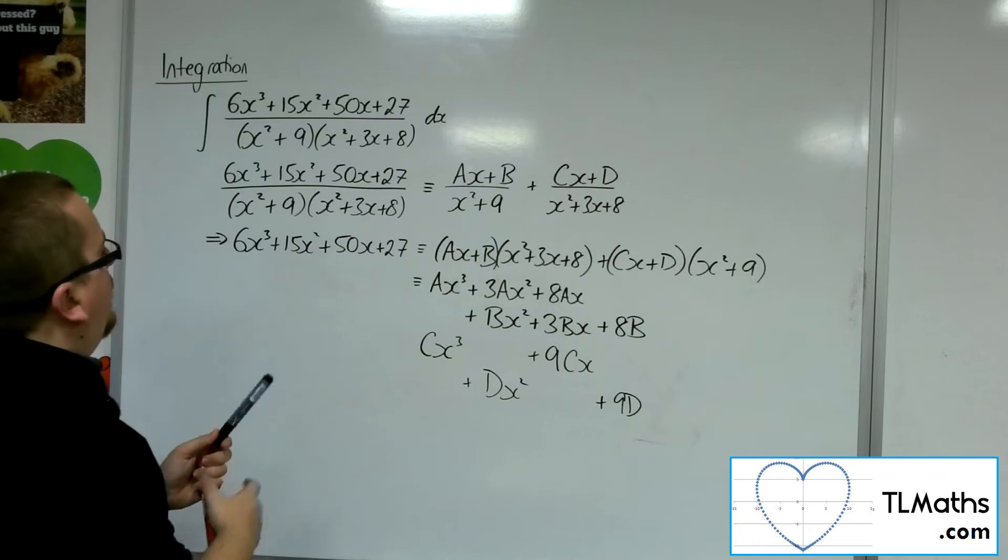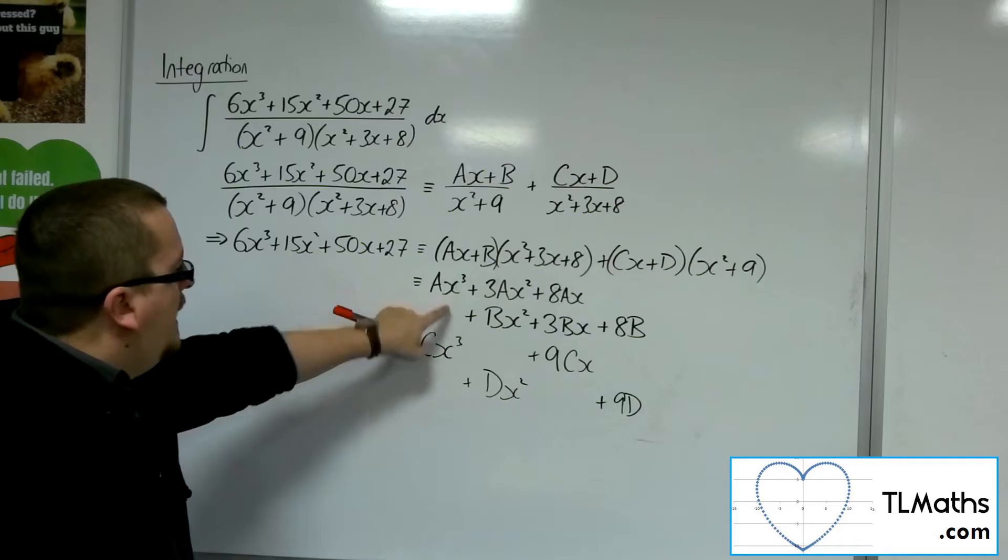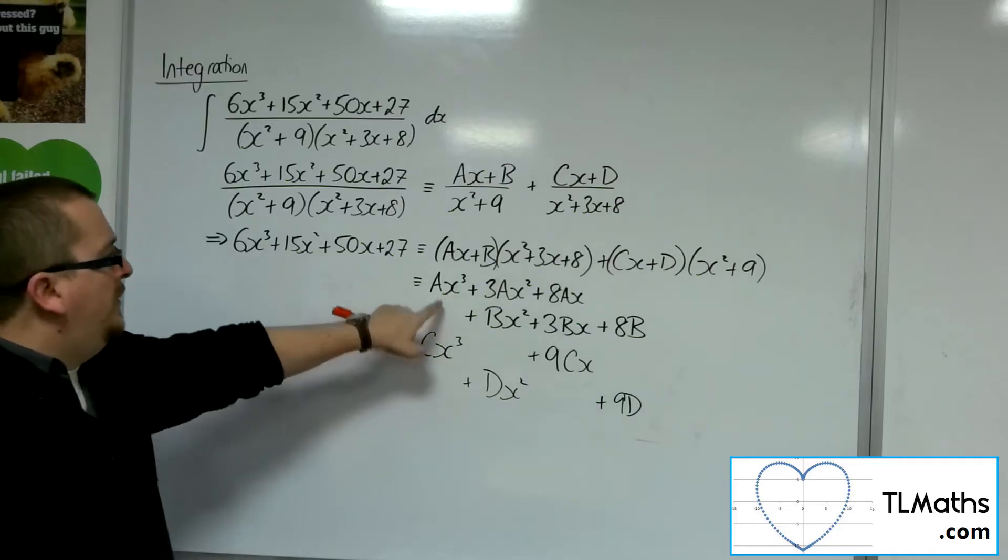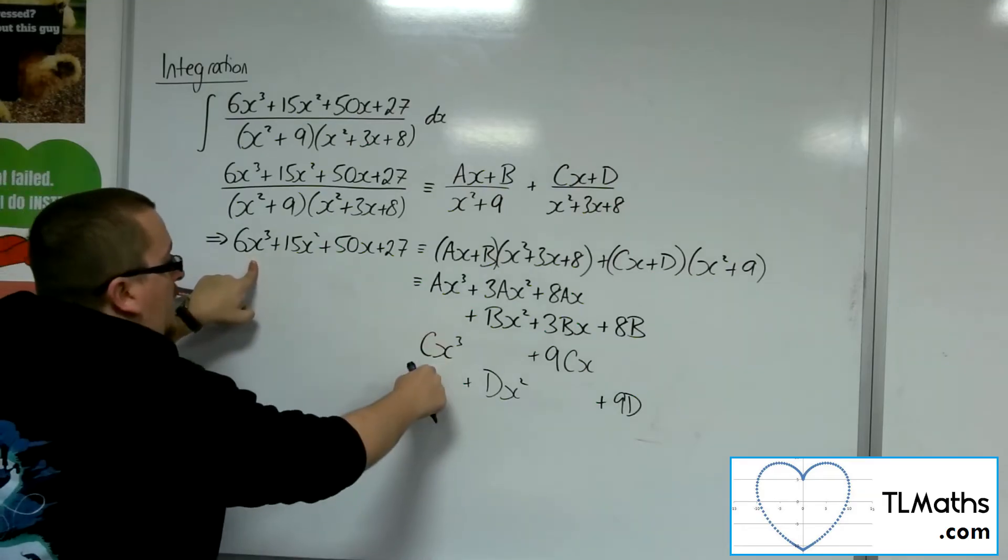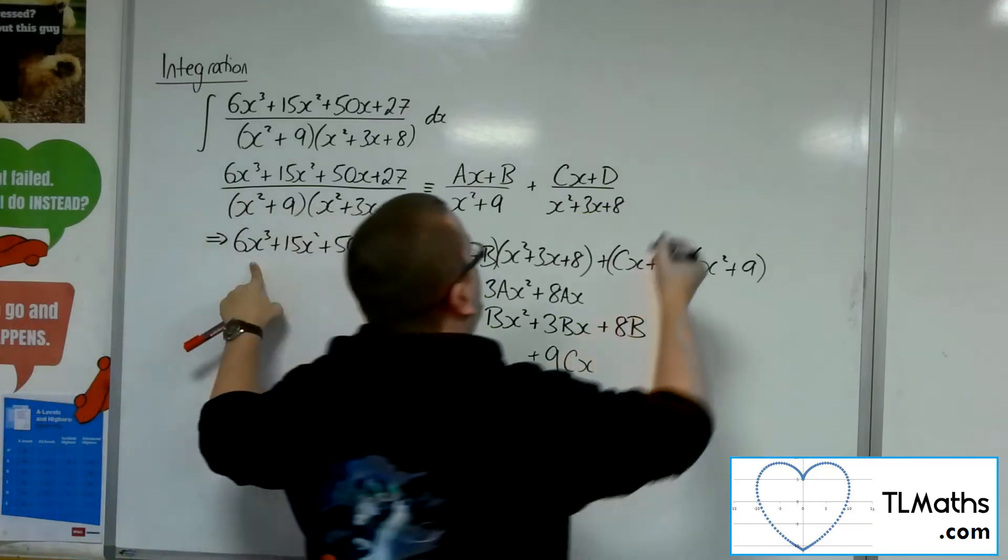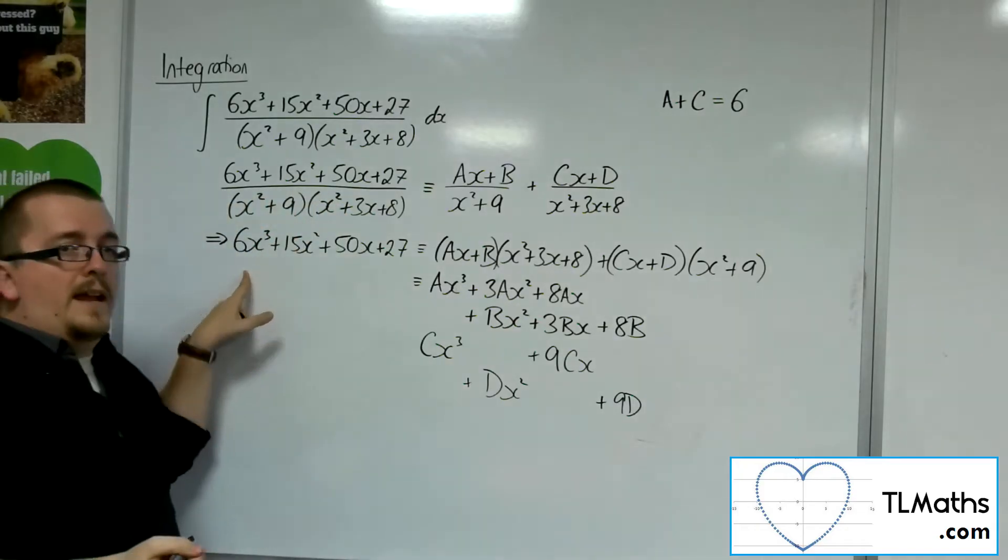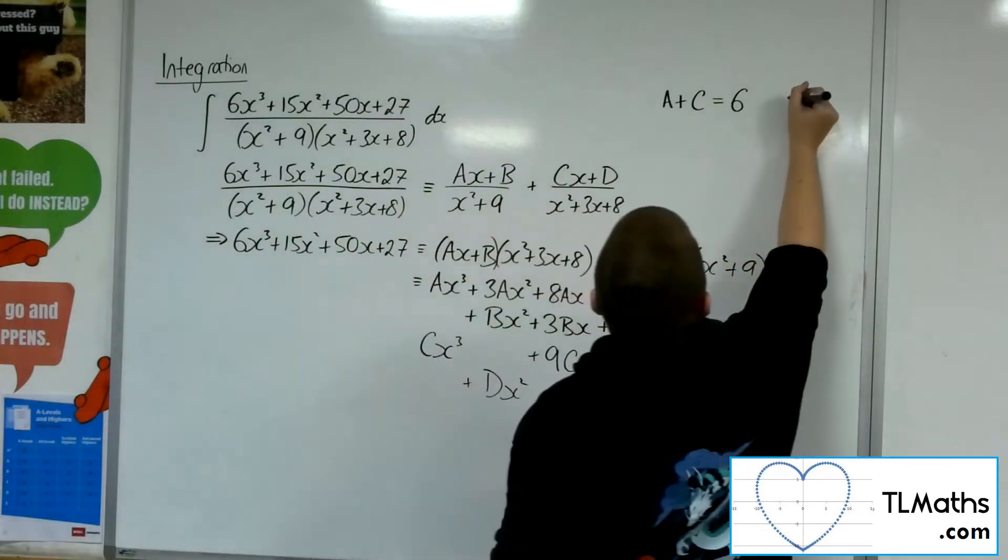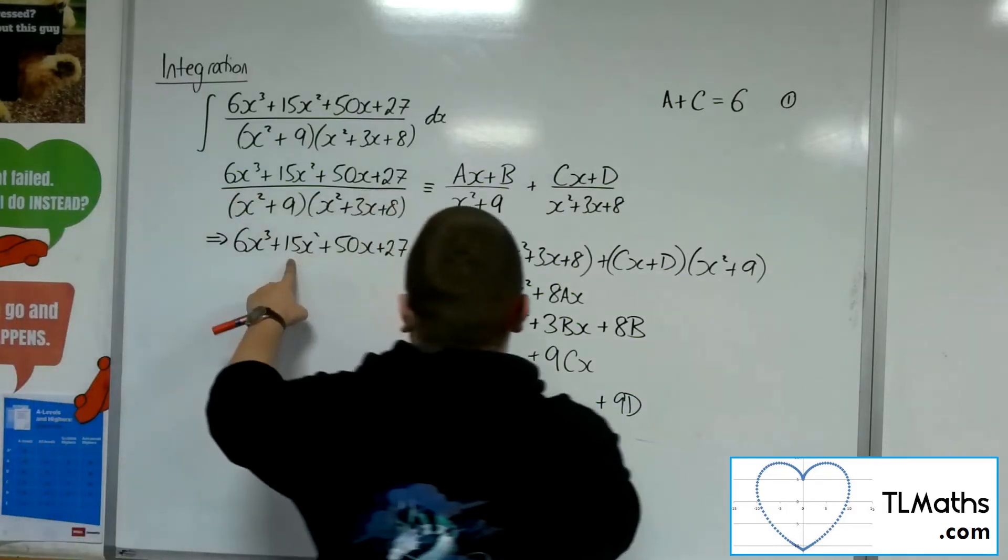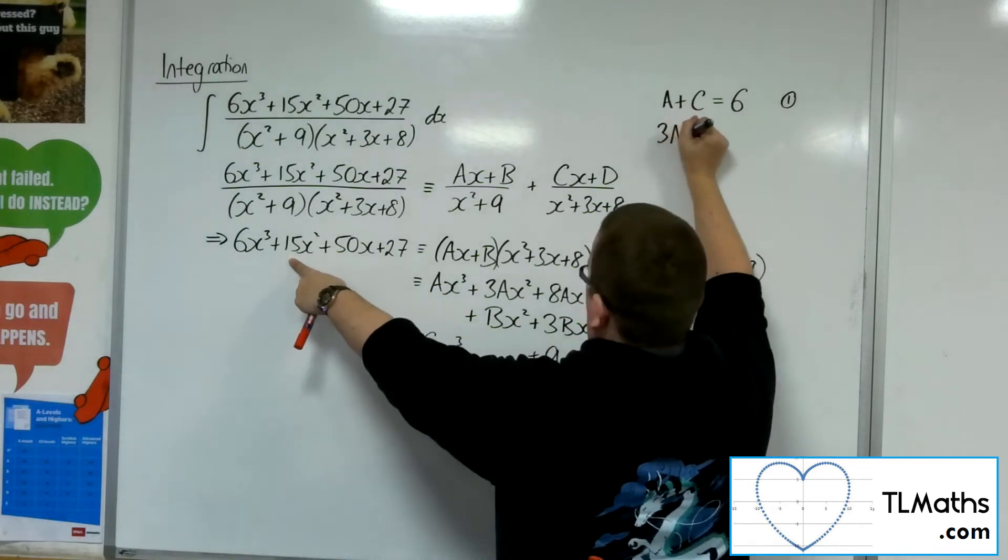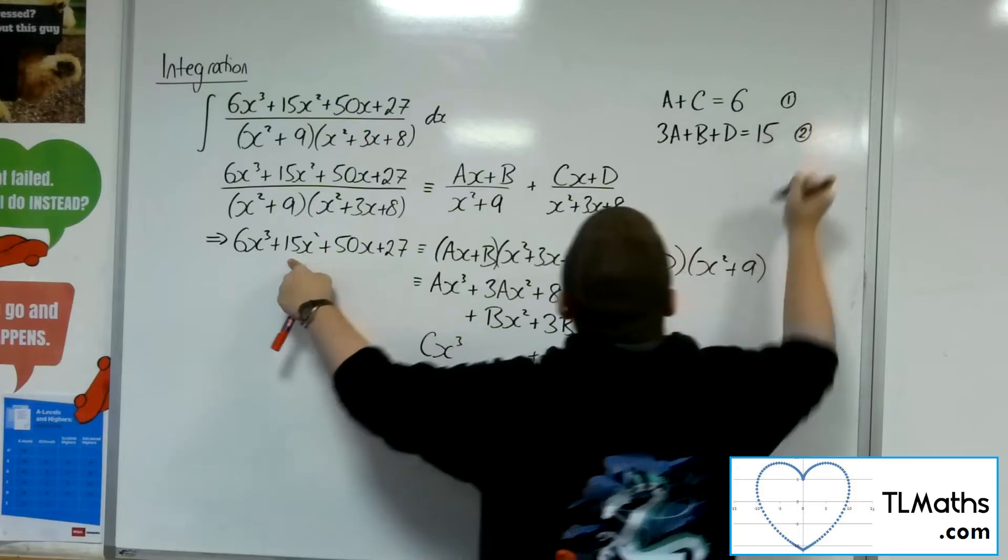Now what I do is I compare that with what I've got here. So I've got ax cubed plus cx cubed. So the a plus c has got to be the same as the 6. These would have to add up to 6x cubed. So I've got a plus c will have to be 6. That's equation number 1. Now for the x squared, so I've got 3a plus b plus d. And that's got to be 15. So 3a plus b plus d has got to be 15. That's equation number 2.